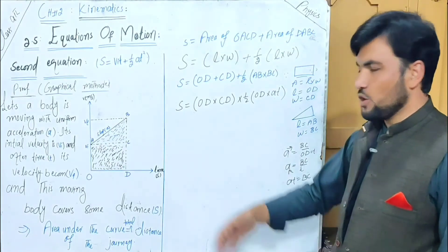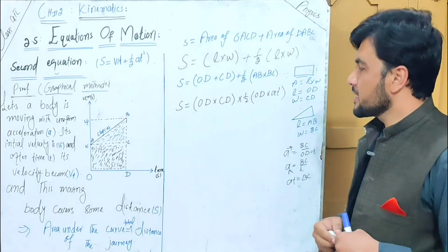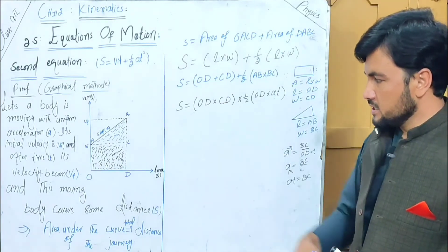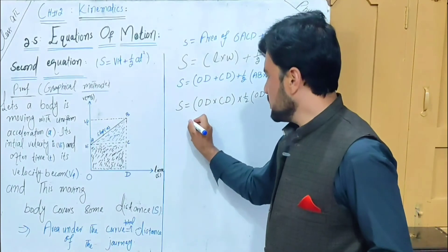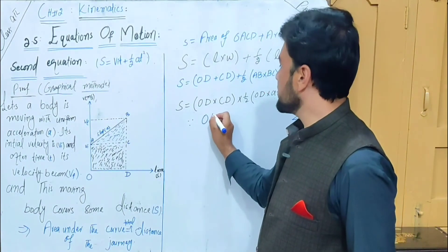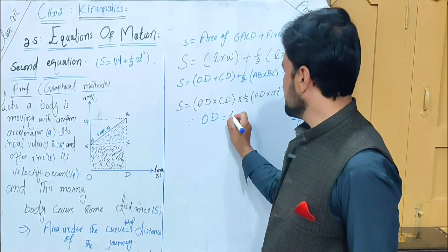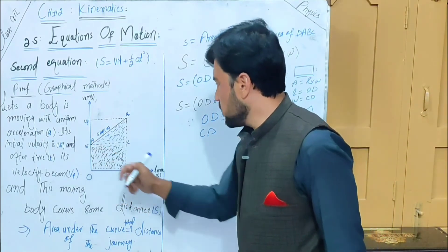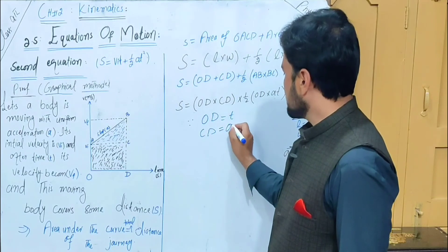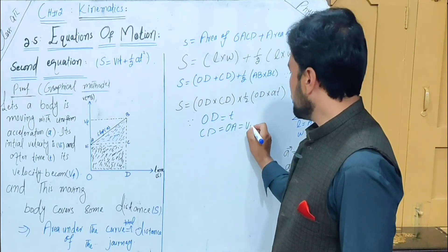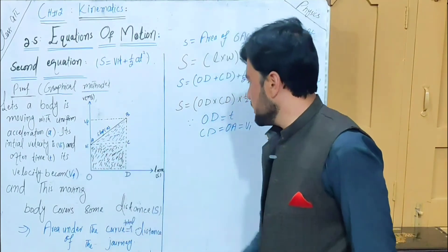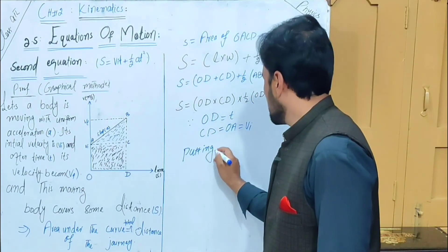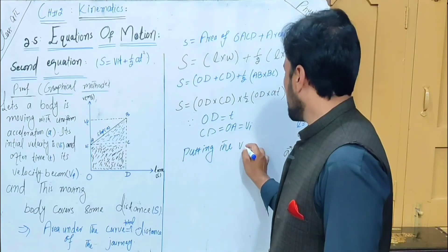Now we will put the quantities from the graph: OD, CD, and their values. Looking at the graph, OD equals time t. CD equals OA, and OA equals v_i, the initial velocity.